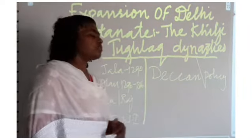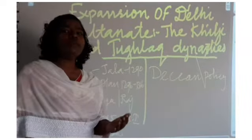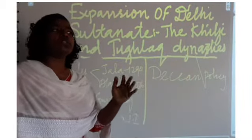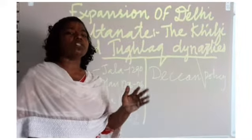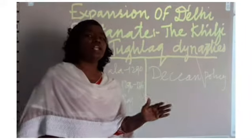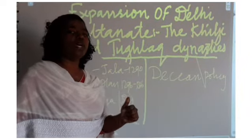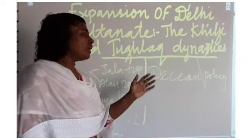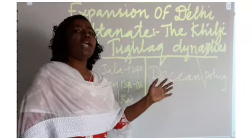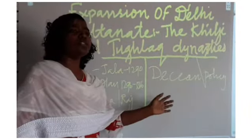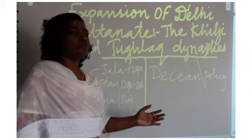Regarding Mongol invasions, as soon as he became the ruler, he was abolishing all hindrances against him. He wanted to be a powerful ruler without any enemies. As part of that, he also countered the Mongols. Before Alauddin Khalji, the Mongols had invaded India five times.